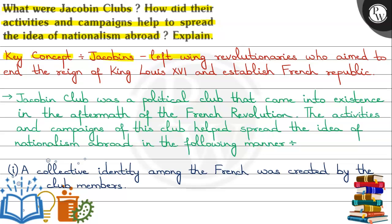Who were Jacobins? They were left-wing revolutionaries who had the aim of ending the reign of King Louis XVI in France and establishing a republic. The Jacobin club was a political club that existed in the aftermath of the French Revolution, and its activities and campaigns helped to spread the idea of nationalism abroad in the following manner.